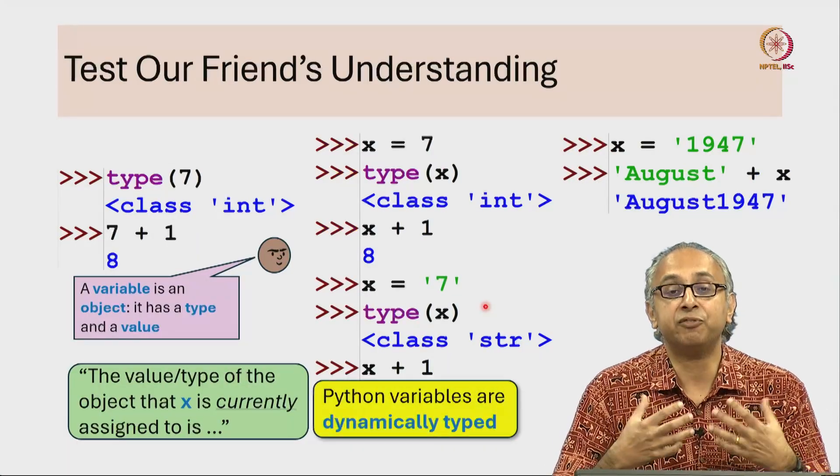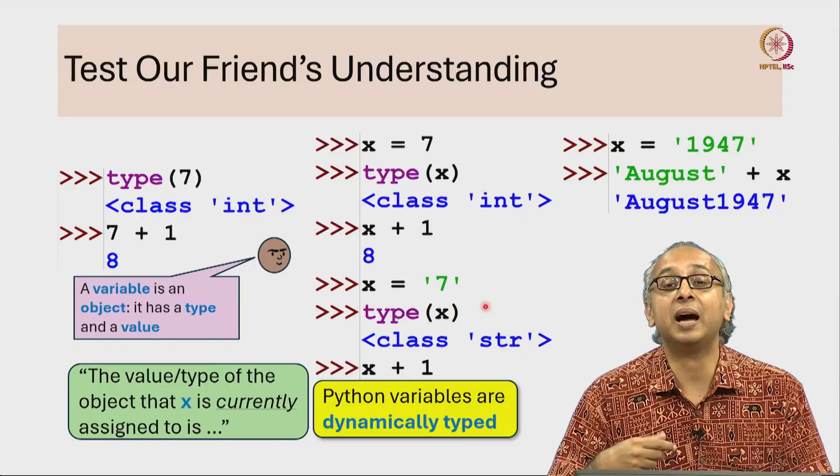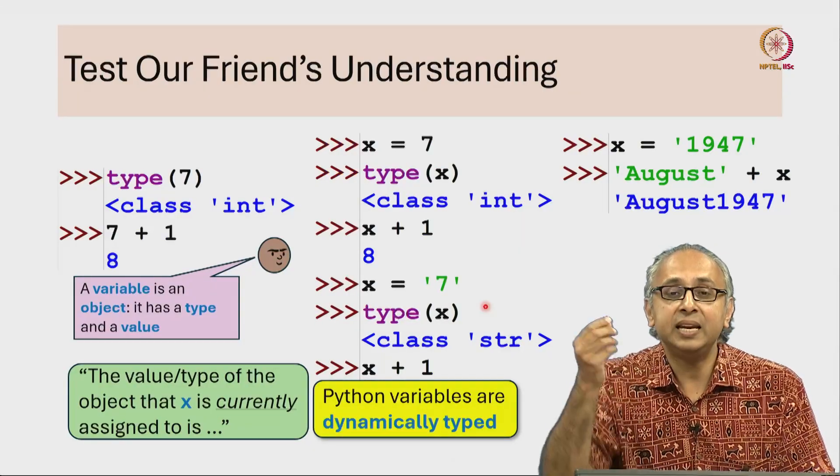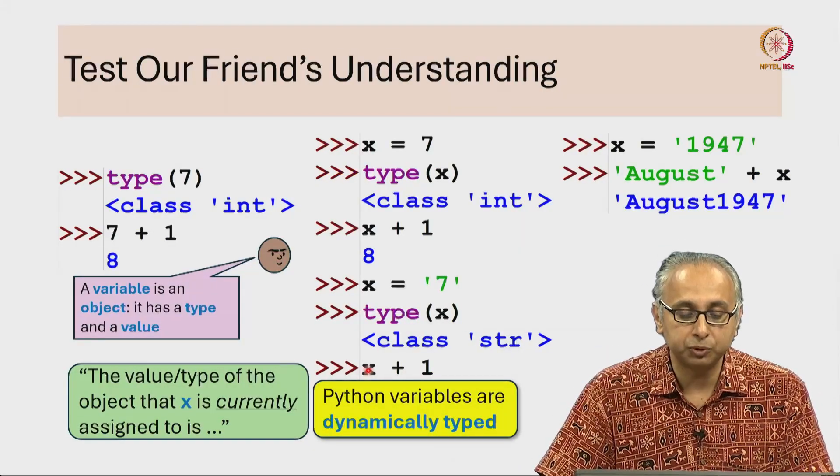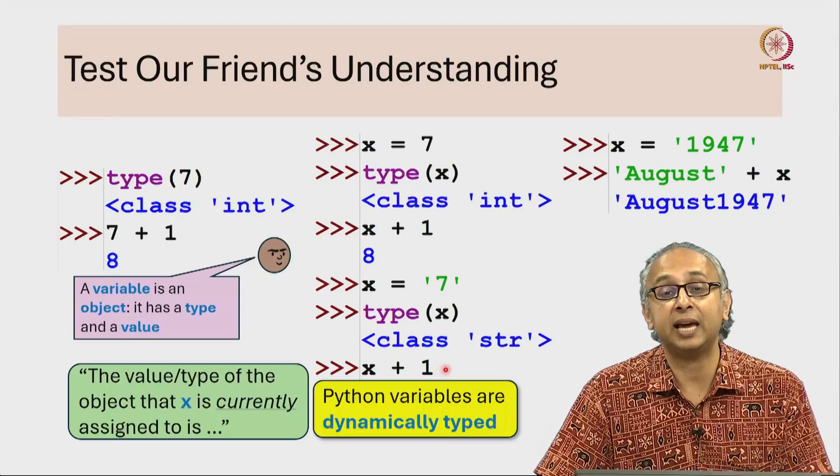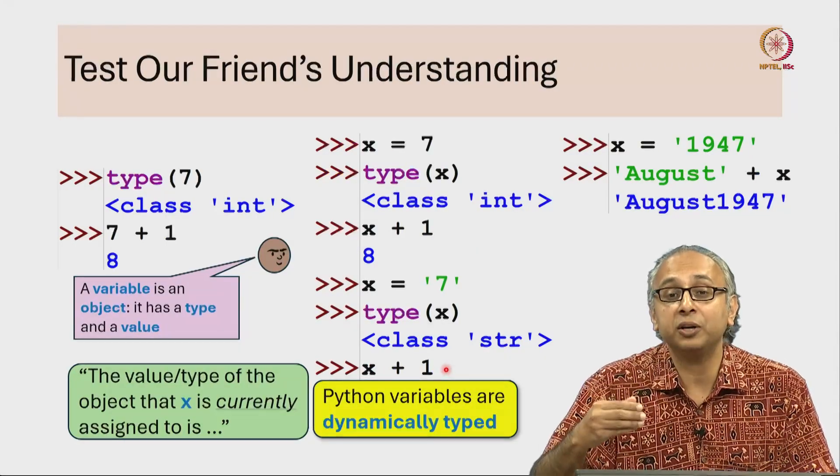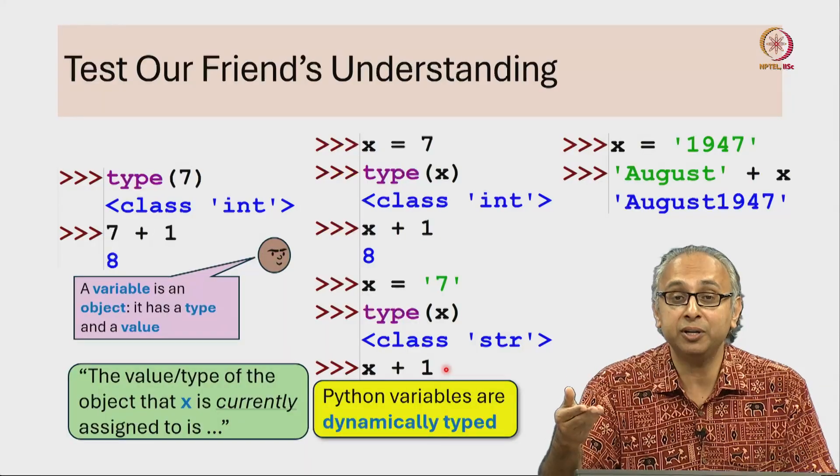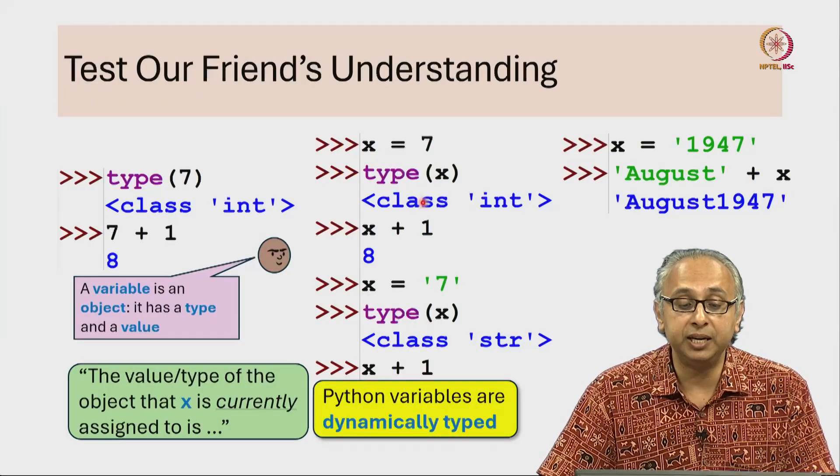So we say that variables in Python are dynamically typed. At any given point in the program, when you come to this point and you say, can I calculate x plus 1, well it depends on what x is currently referring to. If x was referring to an integer, then absolutely you can calculate x plus 1.